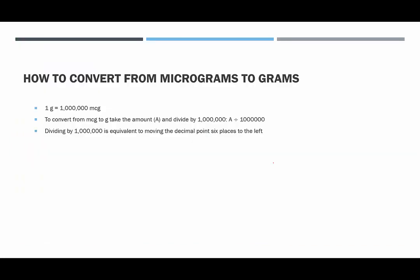How do we convert from micrograms to grams? One gram is equivalent to one million micrograms, so micrograms are really, really small. To convert from micrograms into grams, take the amount of micrograms and divide it by one million, so it would be the amount divided by one million.